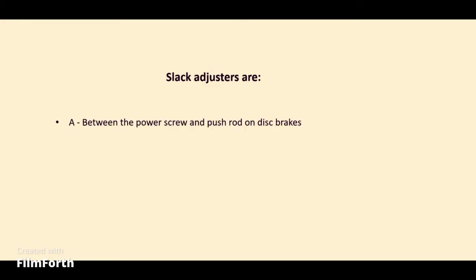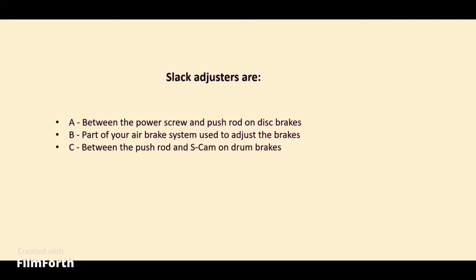Slack adjusters are: A. Between the power screw and push rod on disc brakes. B. Part of your air brake system used to adjust the brakes. C. Between the push rod and S-cam on drum brakes. D. All of the above. The answer: D. All of the above.